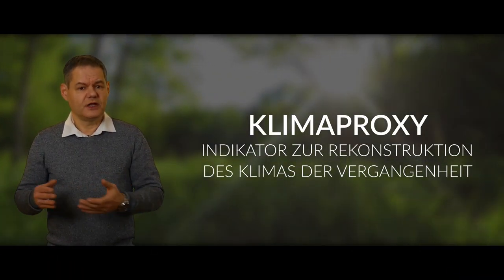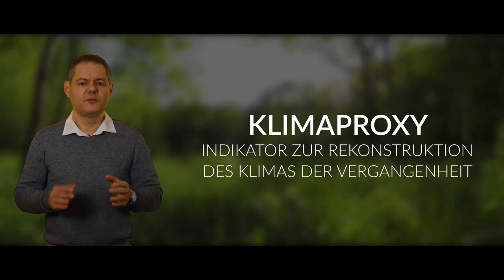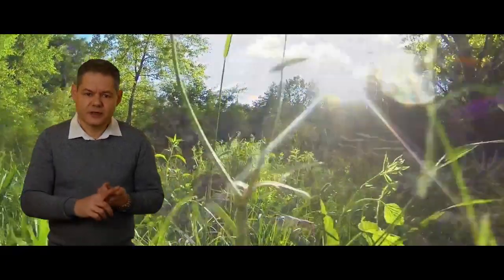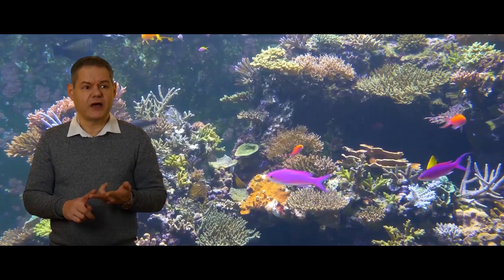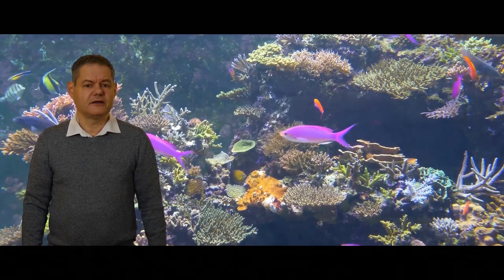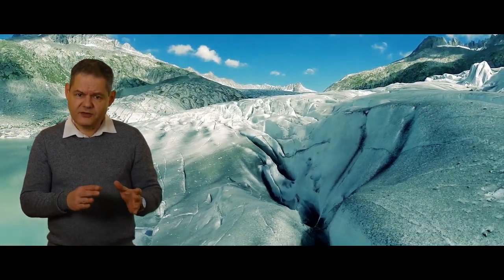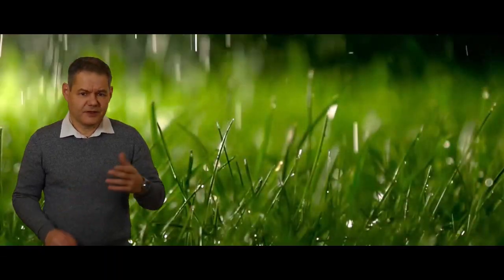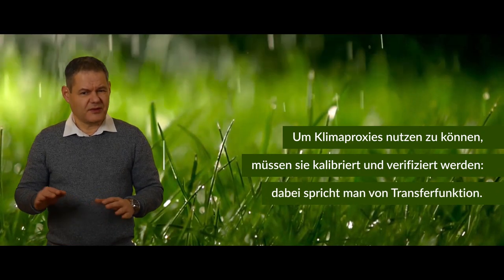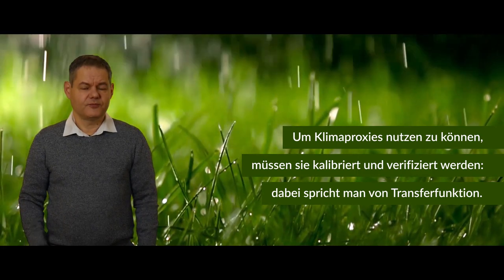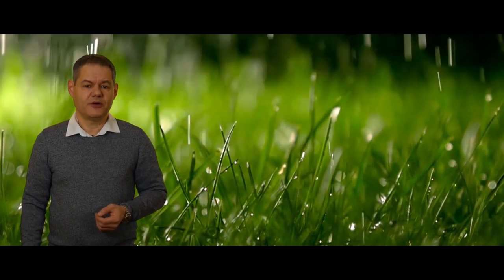Dazu zieht man sogenannte Klimaproxys heran – und zwar natürliche und indirekte. Natürliche Klimaproxys sind überprüfbare geologische oder biologische Größen. Dazu gehören zum Beispiel Baumringe, Korallenwachstum, Isotopvariationen in Eisbohrkernen, ozeanische Sedimente, Fossilien, Gletscherverläufe und viele andere Dinge. Aus solchen Klimaproxys lassen sich Temperaturentwicklungen für die letzten 2000 Jahre ableiten. Da die resultierenden Berechnungen aus verschiedenen Gründen nicht sehr präzise ausfallen, muss man sie stets mit anderen Proxys vergleichen, bevor man Schlüsse über etwa die Regenmenge in einer bestimmten Epoche ziehen kann.